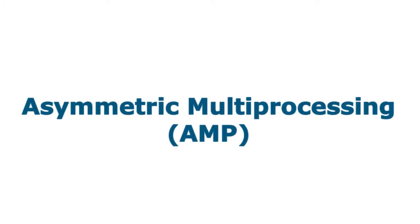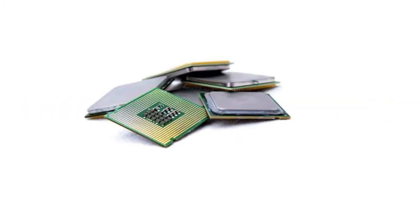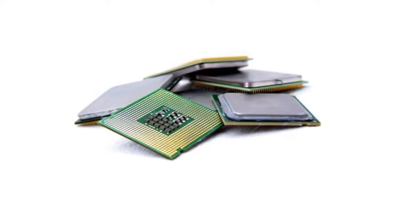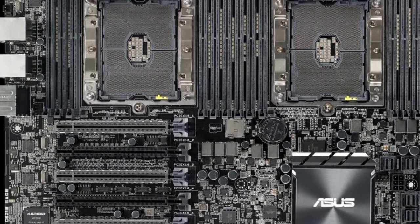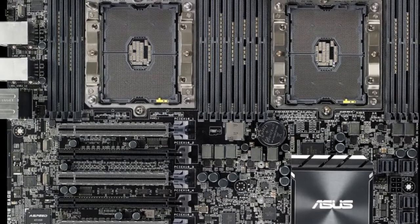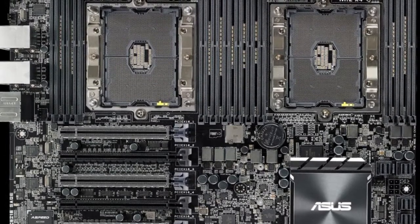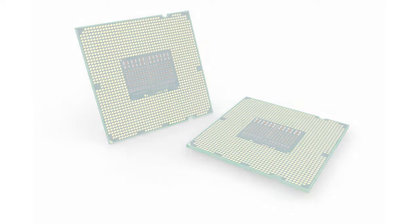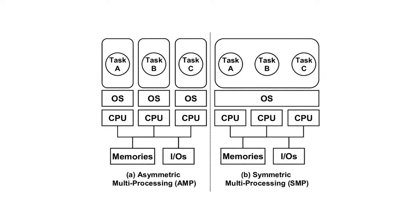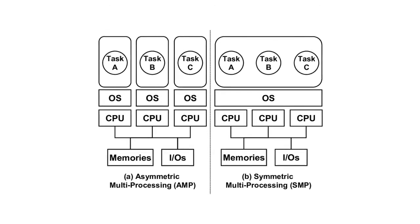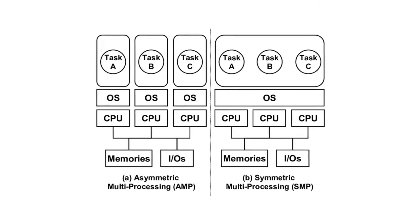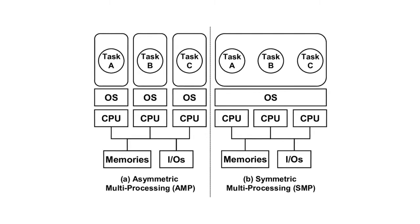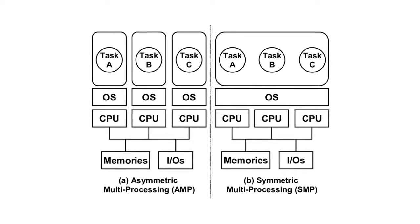Asymmetric Multiprocessing is an approach to distributing processing load on a multiprocessor computer in which each processor is assigned specific tasks to perform. A multiprocessor computer is a computer with more than one CPU. For example, one processor might be dedicated to managing I/O requests, another to executing network requests, another to running a user application, and so on.